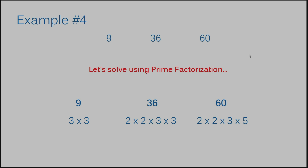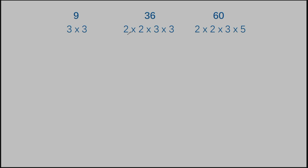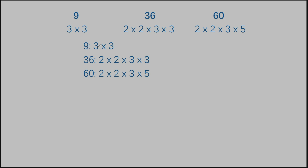If we find the prime factors of these numbers: 9 would be 3 times 3; 36 would be 2 times 2 times 3 times 3; and 60 would be 2 times 2 times 3 times 5. I'm going to stack the numbers — 9, 36, and 60 — with their prime factorizations written directly to the right, stacked on top of each other so it's easier to compare.